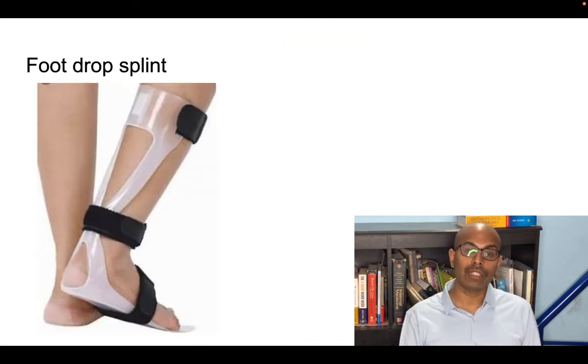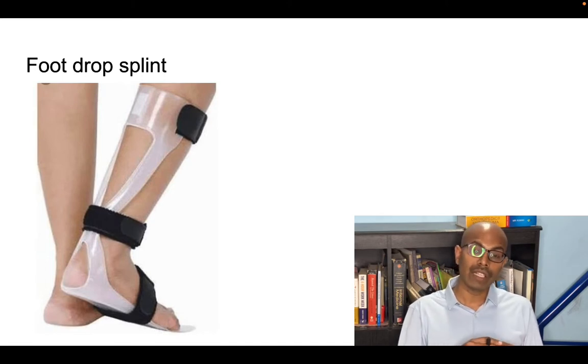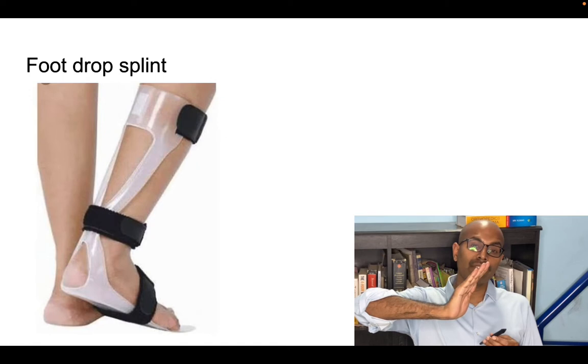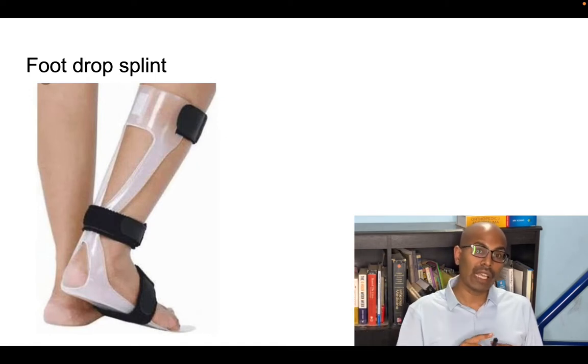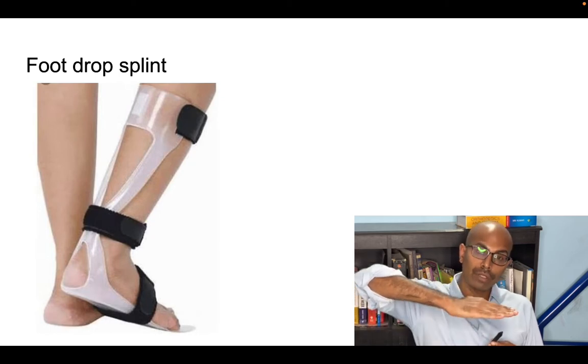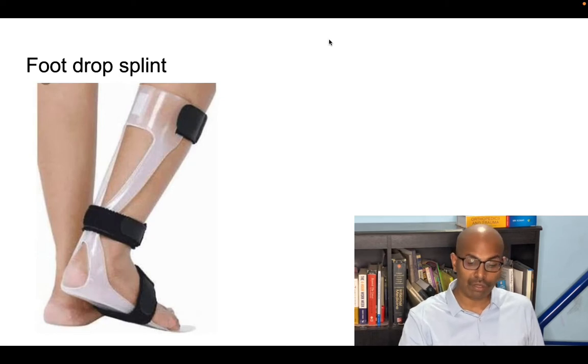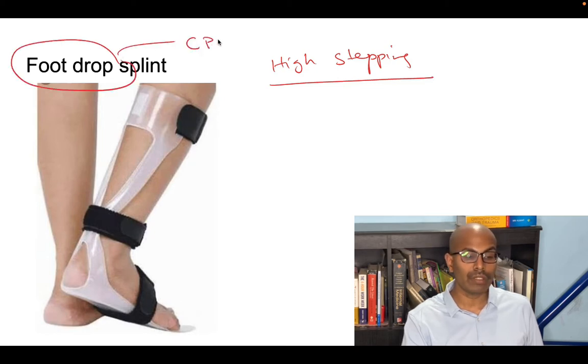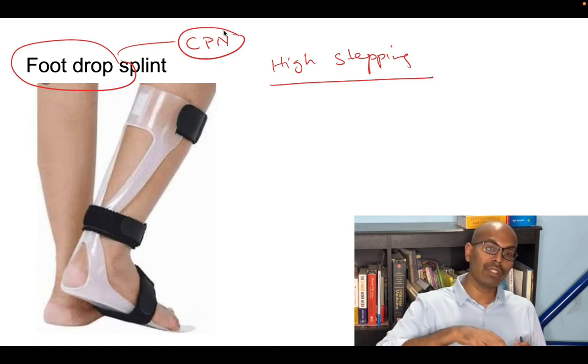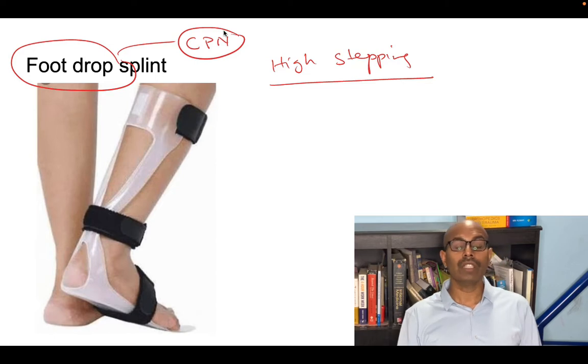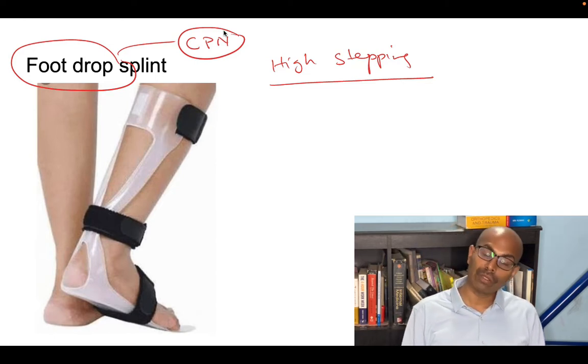Then we have the foot drop splint. The foot drop splint is used in case of common peroneal nerve injuries where the tibialis anterior and the extensor hallucis longus and extensor digitorum longus are affected where the patient is not able to dorsiflex the foot. This very commonly happens in trauma and in Hansen's or leprosy. In these conditions, you have to give a foot drop splint so the patient can keep the foot in neutral position. Otherwise the patient will have a high stepping gait. Foot drop occurs most commonly after a common peroneal nerve injury and injury to the tibialis anterior which is responsible for dorsiflexion, and extensor hallucis longus and extensor digitorum longus which are responsible for extension of the toes. When these muscles are affected it causes foot drop and that is where you use the foot drop splint.